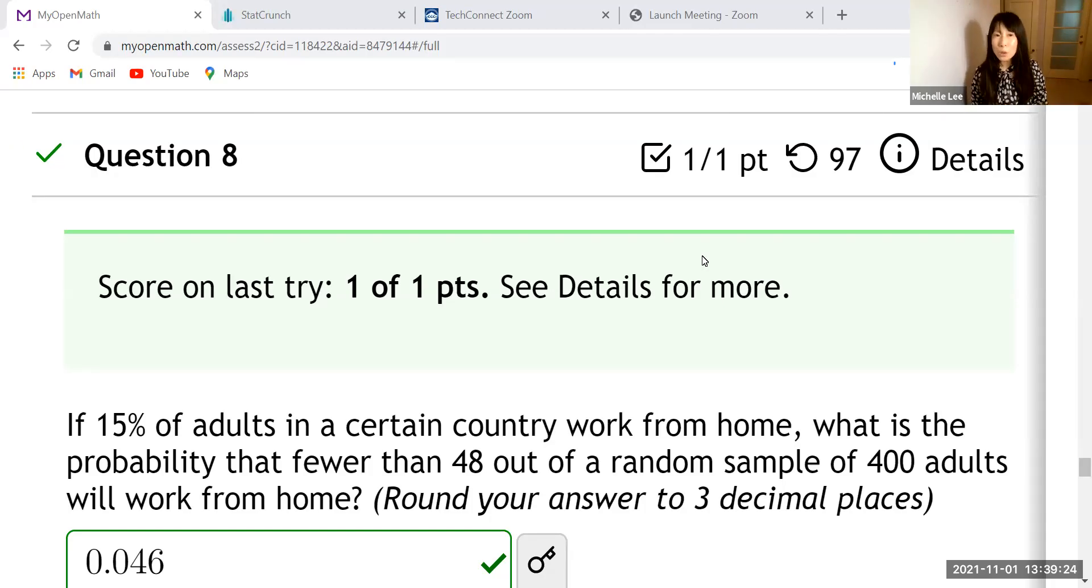Hello, everyone. I'd like to talk about sample proportion of sampling distribution. So here is the question. If 15% of adults in a certain country work from home, what is the probability that fewer than 48 out of a random sample of 400 adults will work from home? Round your answer to three decimal places.